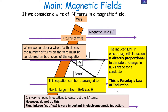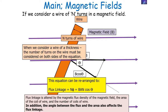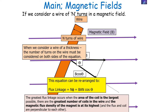Flux linkage is altered by B (magnetic flux density), A (the area of the coil of wire), and N (the number of turns on the wire). The angle cos theta between the flux and the area also affects flux linkage. Greatest flux linkage occurs when the area of the coil is largest, the number of coils is greatest, the magnetic flux density is highest, and the flux and coil are perpendicular to each other.